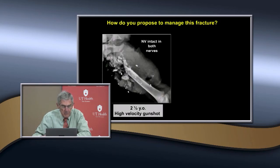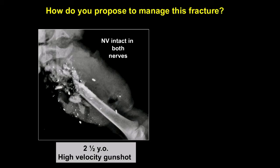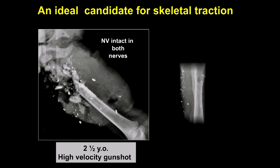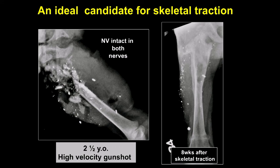An example of a primary indication for traction: a patient in a trailer whose father had loaded hunting guns on the wall; kids running down the hall hit the wall, the gun fired, creating an open femur fracture — fortunately with intact nerves. Internal fixation with plates or pins isn't appropriate in an open contaminated wound of this type. Skeletal traction is the primary indication here. This patient was treated in traction, seen at age 18, and did very well — at this age group there's a lot of remodeling capacity.